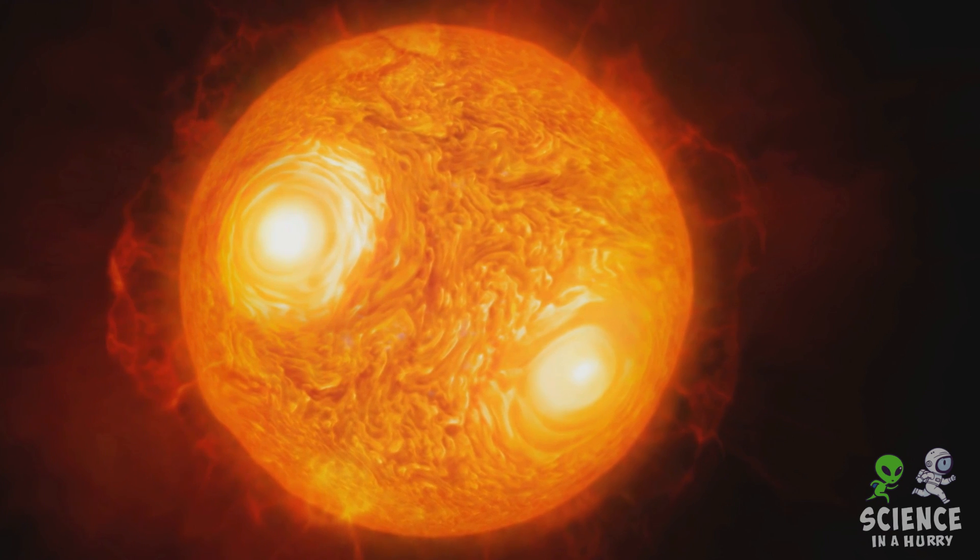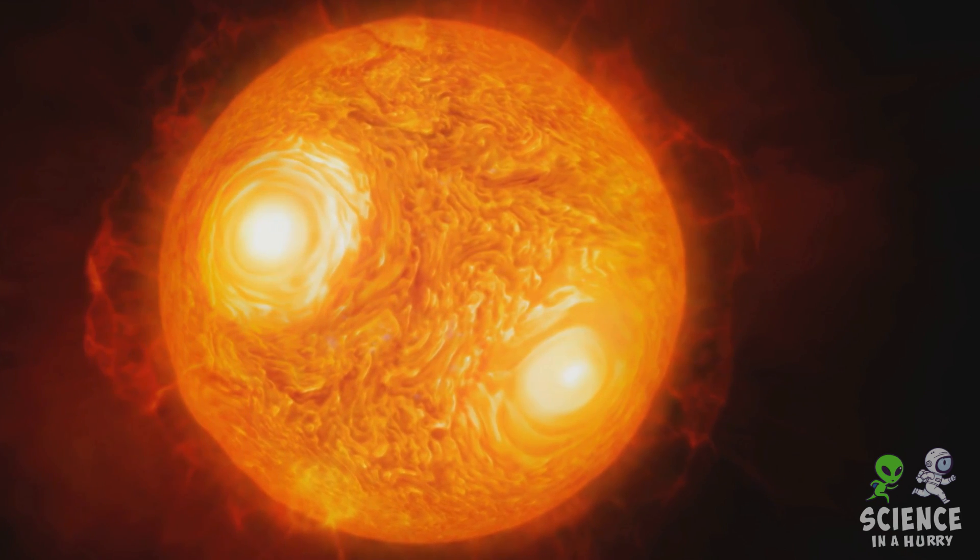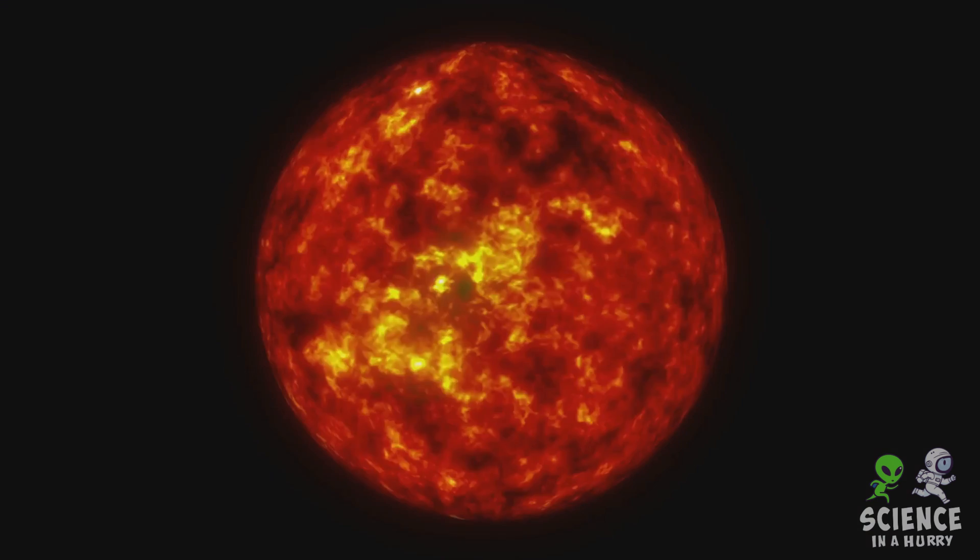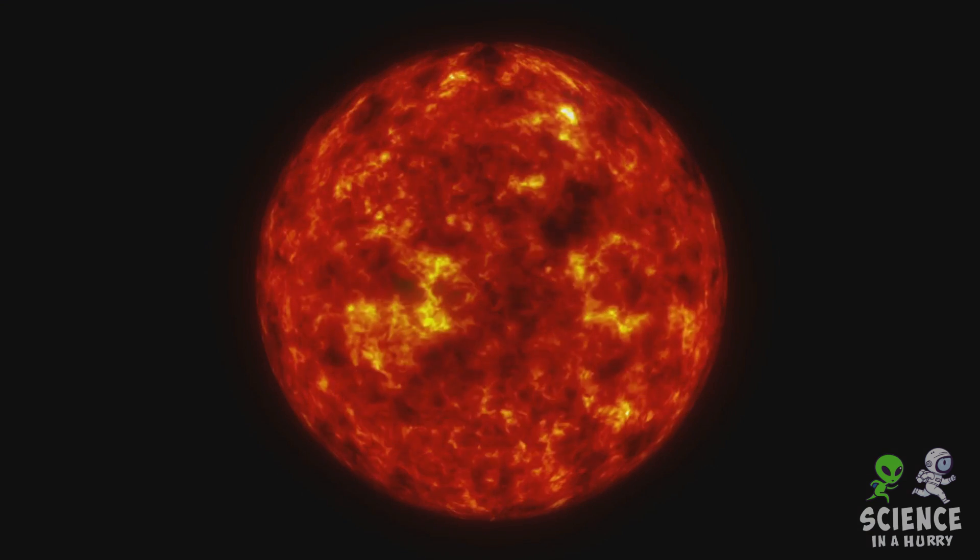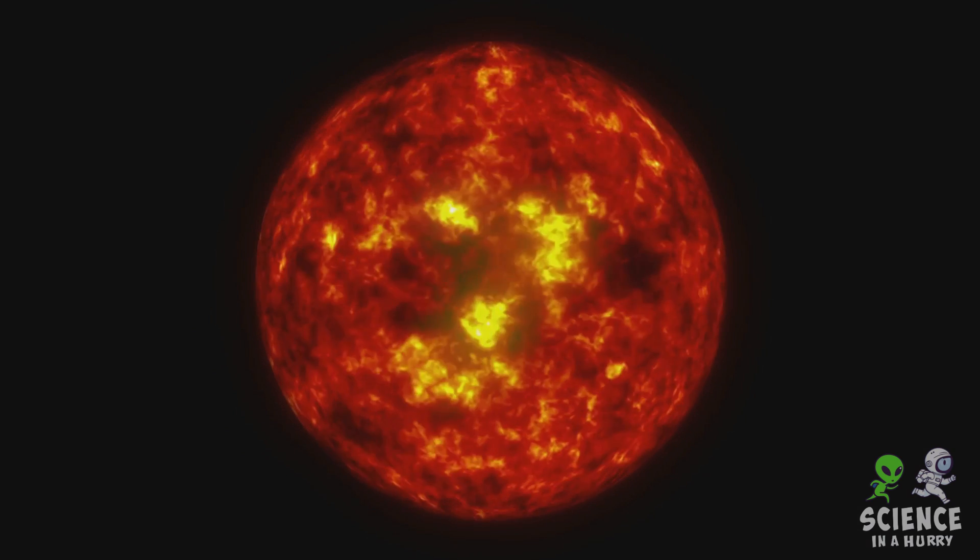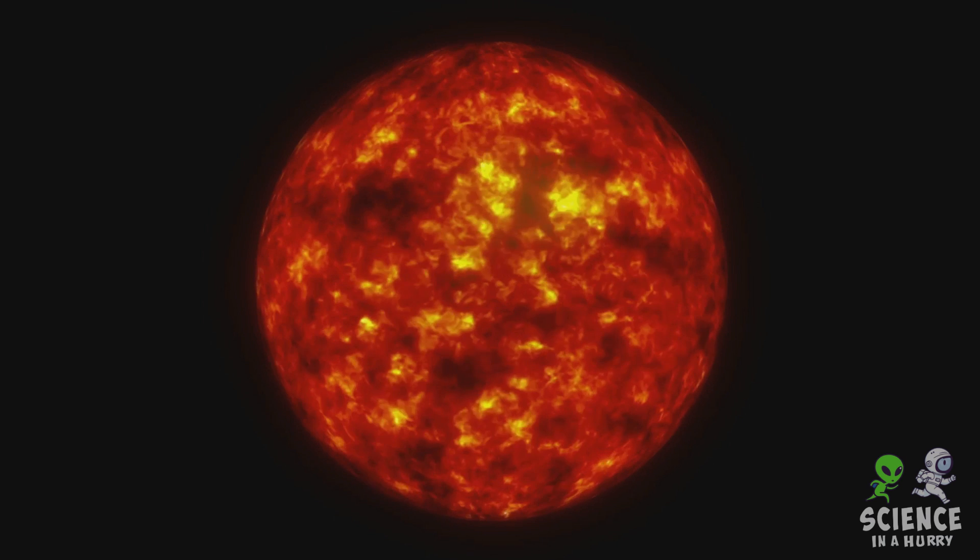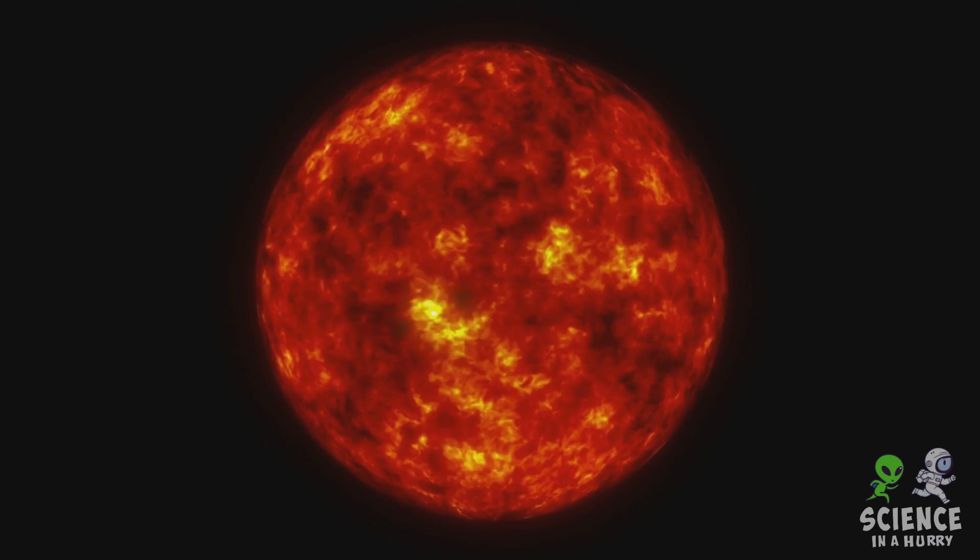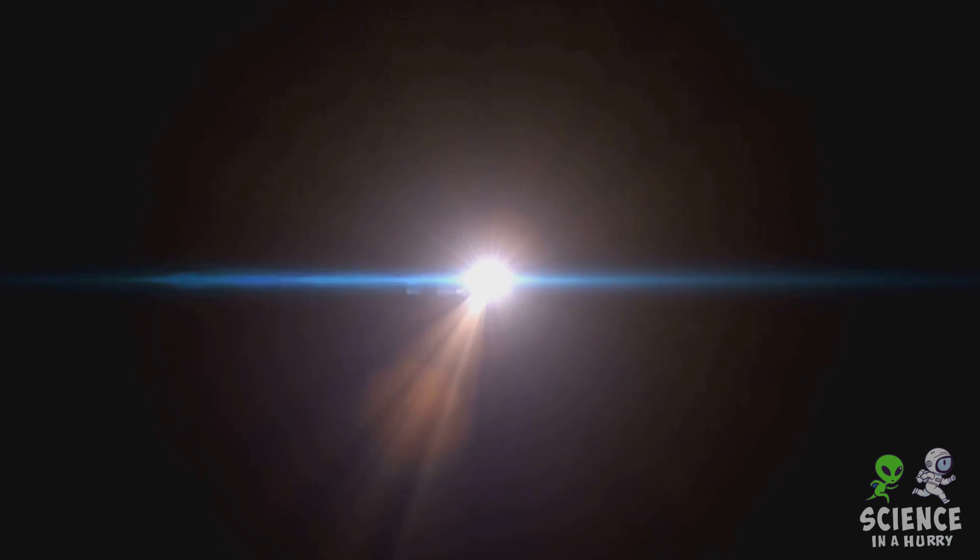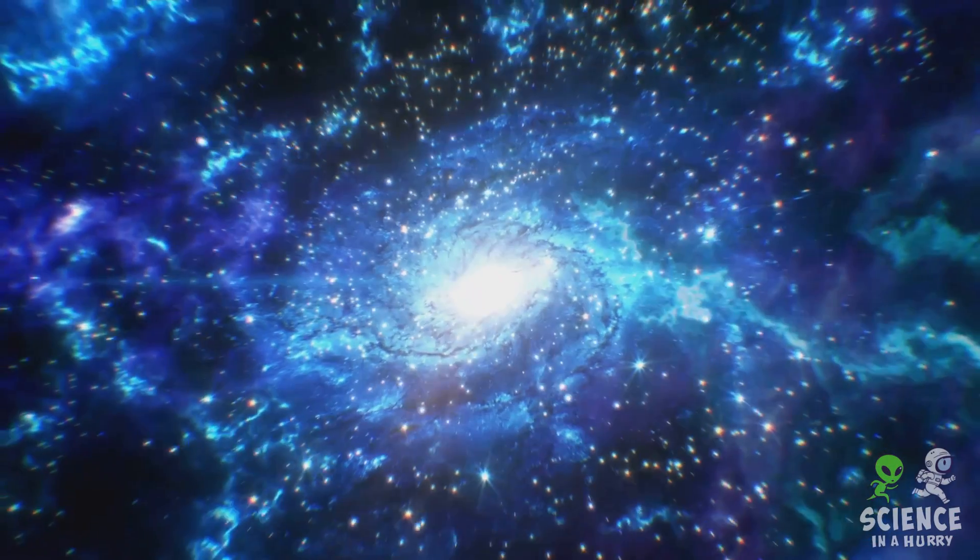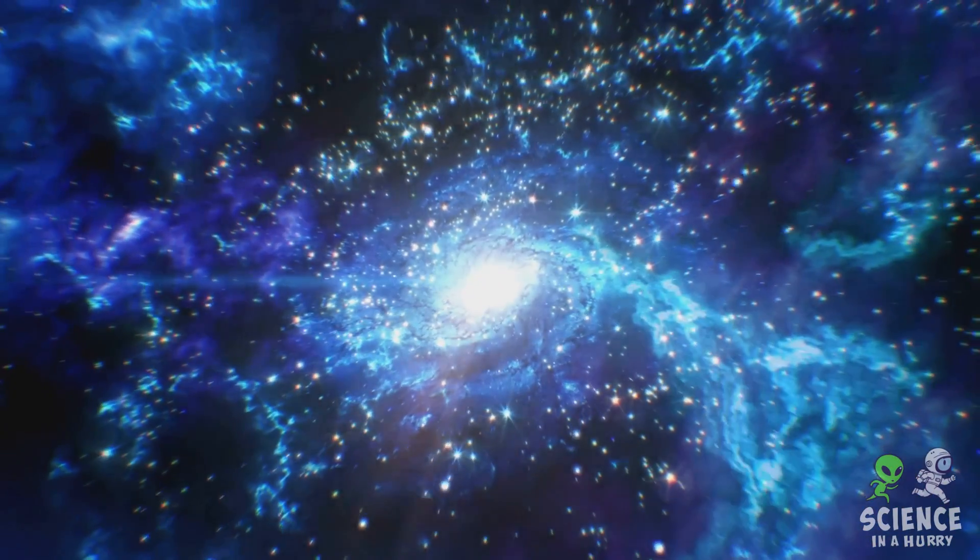The reason scientists believe Betelgeuse is nearing the end of its life cycle lies in its status as a red supergiant. This stage occurs after a massive star has exhausted the hydrogen fuel in its core and begun to burn heavier elements. The star expands and cools, taking on a red hue. Eventually, the star will exhaust its fuel supply, leading to a collapse under its gravity and triggering a spectacular supernova explosion.